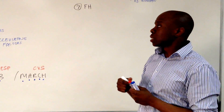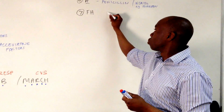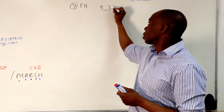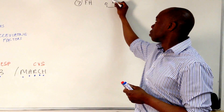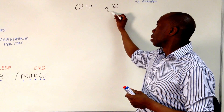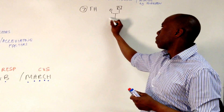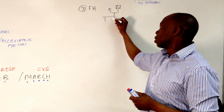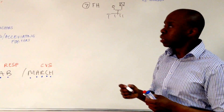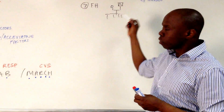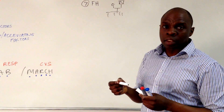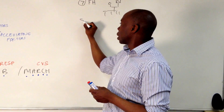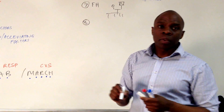For genetics, this is where we start drawing family trees — mum and dad and all the ones coming underneath. So you can do your family tree there, but it's unlikely you'll get something of that complexity in an OSCE.